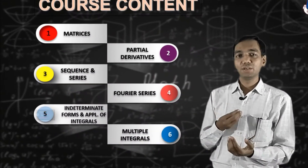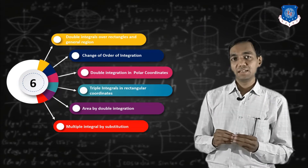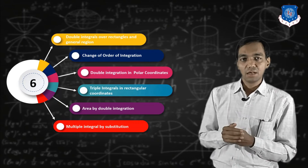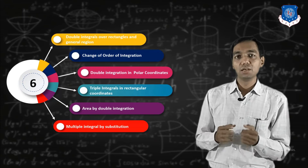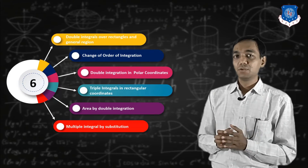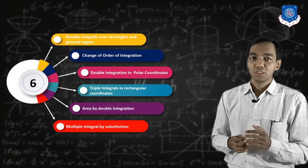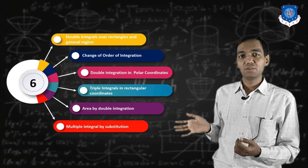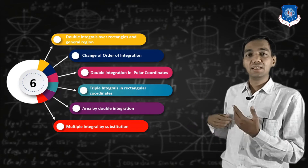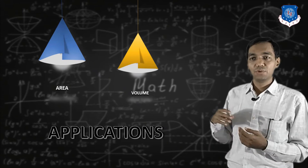The last topic is multiple integrals. Up to grade 12 you learned definite integrals for a single variable; here we learn double and triple integration applied to multivariable functions — integrating with respect to more than one variable. Topics include double integration over a rectangular region, triple integration, applications, and changing regions to different coordinate systems.